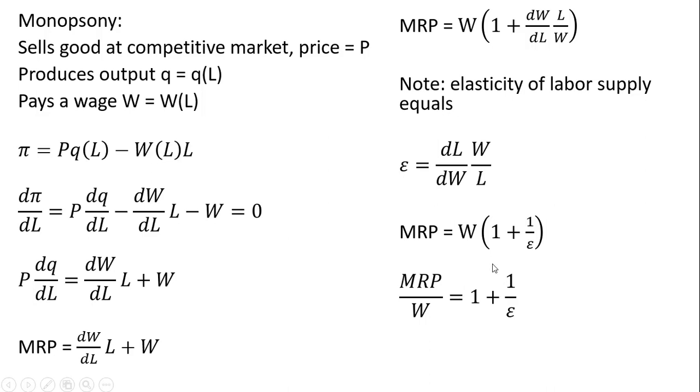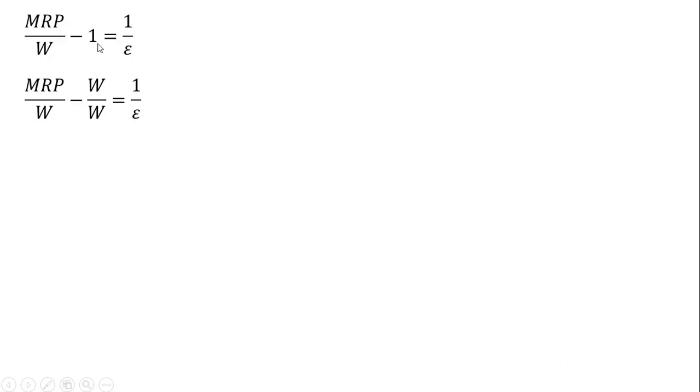Next, I divide both sides by the wage. Then I subtract 1 from both sides. This 1 can be represented as W divided by W. Adding up the fractions on the left-hand side, we get this expression, which is a measure of monopsony power.